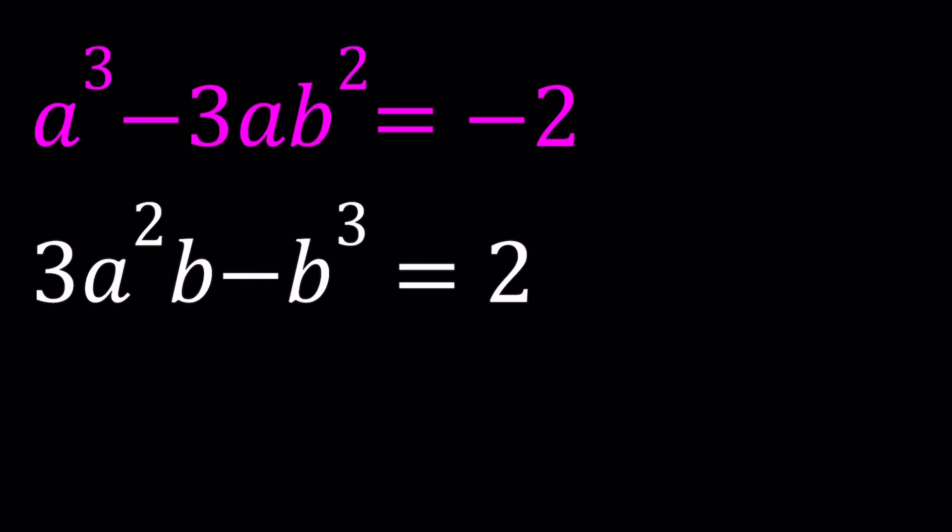Hello everyone. In this video, we're going to be solving a nice polynomial system. We have a³ - 3ab² = -2, and 3a²b - b³ = 2, and we're going to be finding the a and b values.